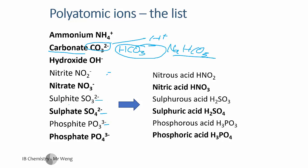And I've just added the -ite and the -ate so you can see that the -ites have one less oxygen than the -ates. And you also have nitrous and nitric acid. So the -ics have more oxygens than the -ous acids.